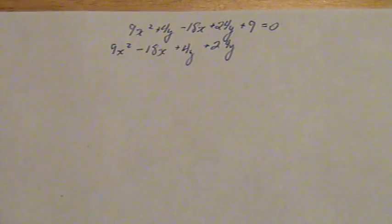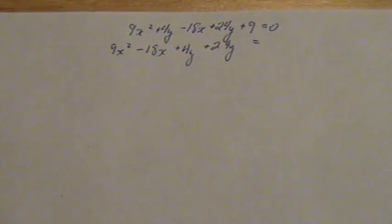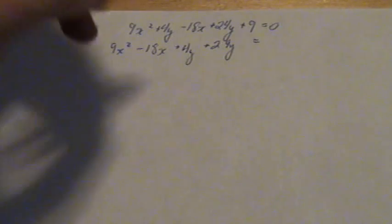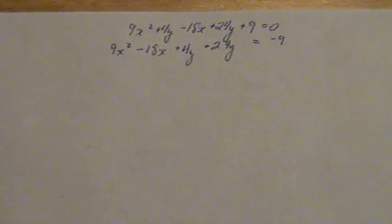Plus 4y squared plus 24y equals, and now we take the 9 and subtract it so that it is on the other side because it will not be involved in completing the square.